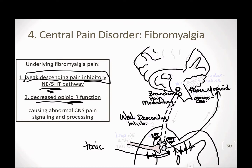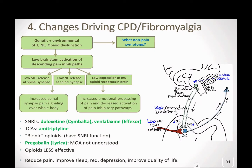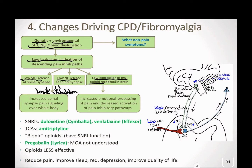We consider central pain disorders to be central pain signaling and processing disorders — they're a CNS processing problem. Using a flowchart: that genetic-environmental problem caused a dysfunction in our serotonin, norepinephrine, and opioid systems. Looking at that brainstem pain modulatory pathway specifically, we're going to have low activation of it, low serotonin release, and low noradrenergic release at the spinal synapse. We're also seeing low expression of mu receptors in the brain, and because of that low noradrenergic and serotonergic signaling, we lose that normal tonic inhibition and increase the spinal synapse's ability to signal pain over the whole body.